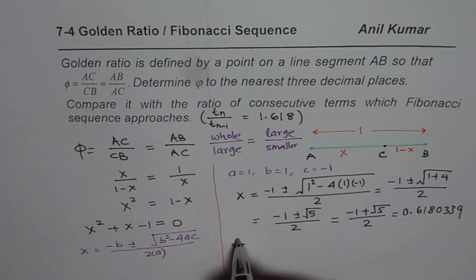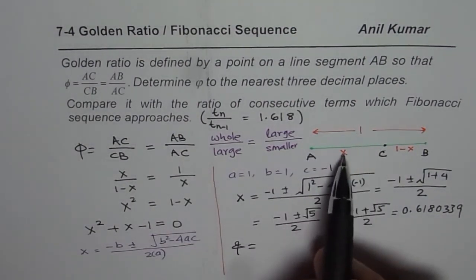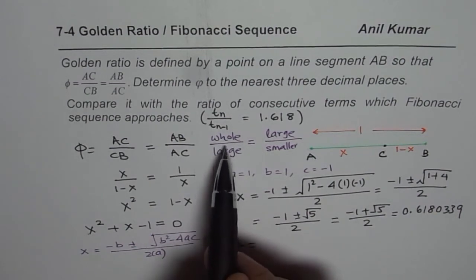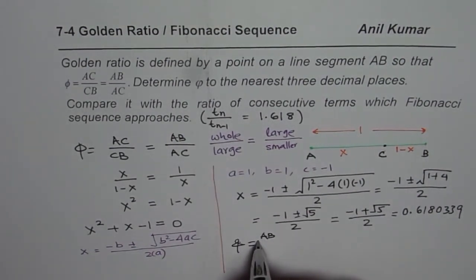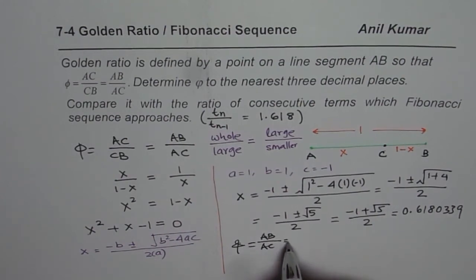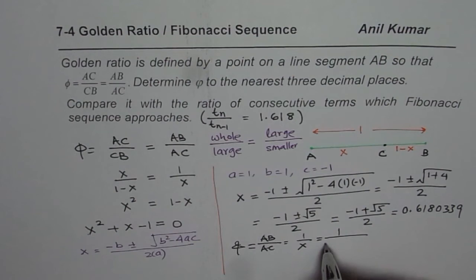Now, what is phi equals to? Now, phi is equals to whole over AC, 1 over AC. Whole over the large value. So, it is AB over AC, which is 1 over X. So, what is 1 over this number?